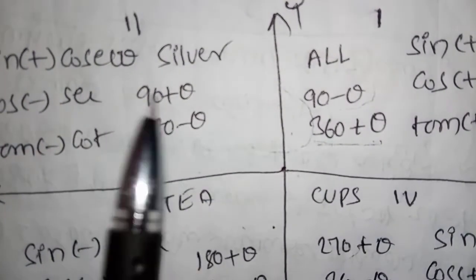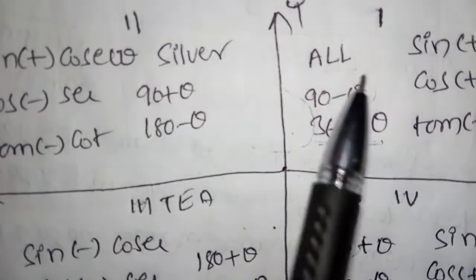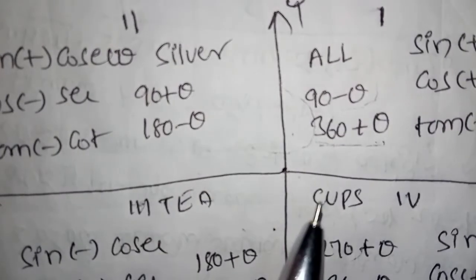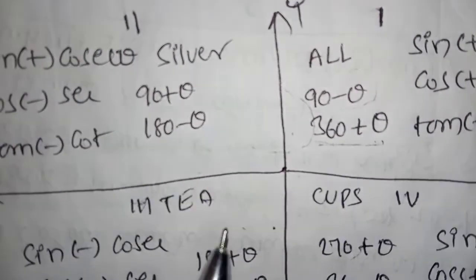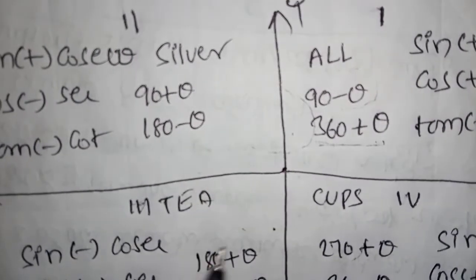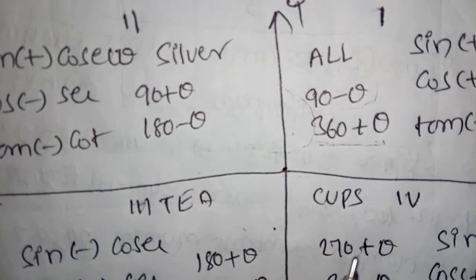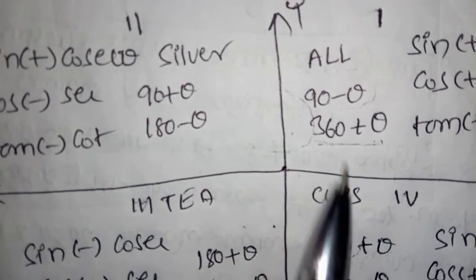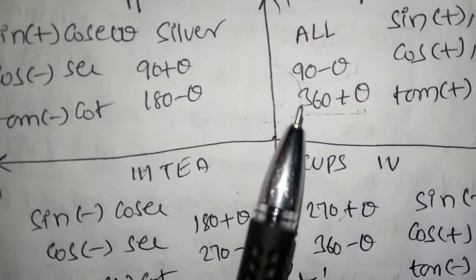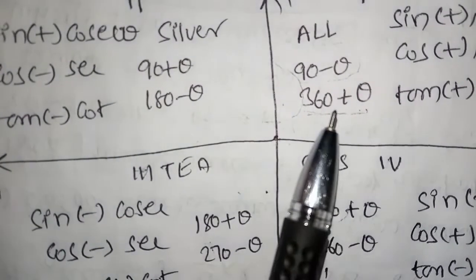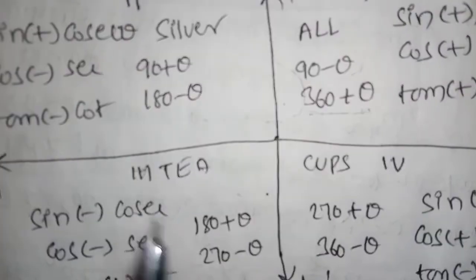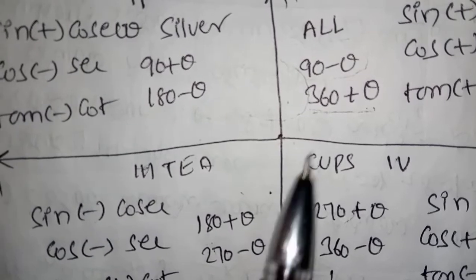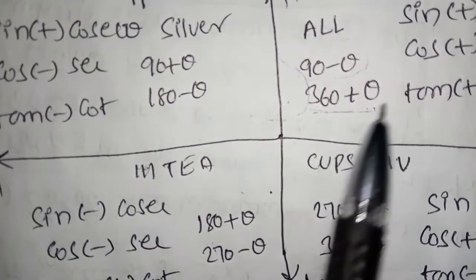Second: sign, cosine place. All silver tea cups — sin, cosine, tan. Cups: cosine and sec. This is the first quadrant, second quadrant, third quadrant, fourth quadrant. All the angles are the same.